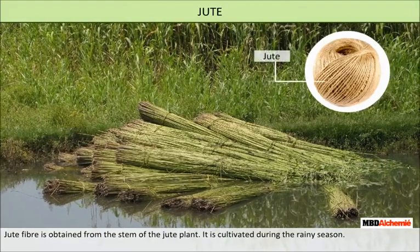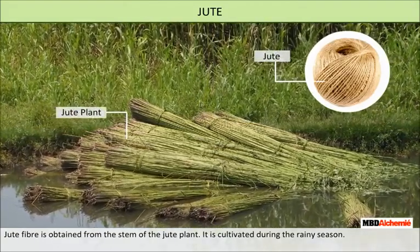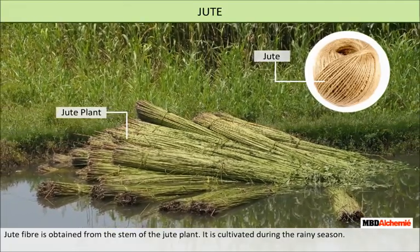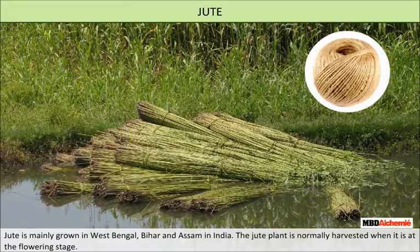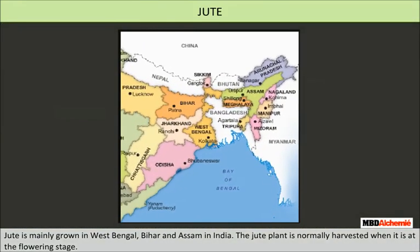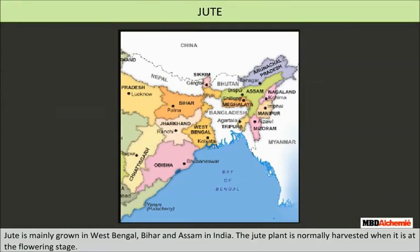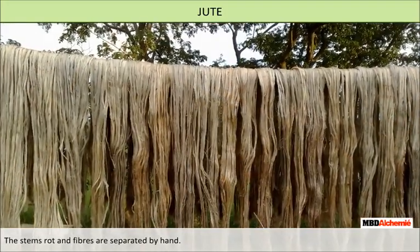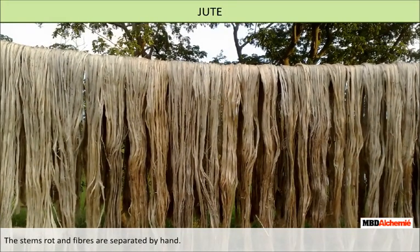Jute: jute fiber is obtained from the stem of the jute plant. It is cultivated during the rainy season and mainly grown in West Bengal, Bihar, and Assam in India. The jute plant is normally harvested at the flowering stage. The stems of the harvested plants are immersed in water for a few days, after which the stems rot and fibers are separated by hand.